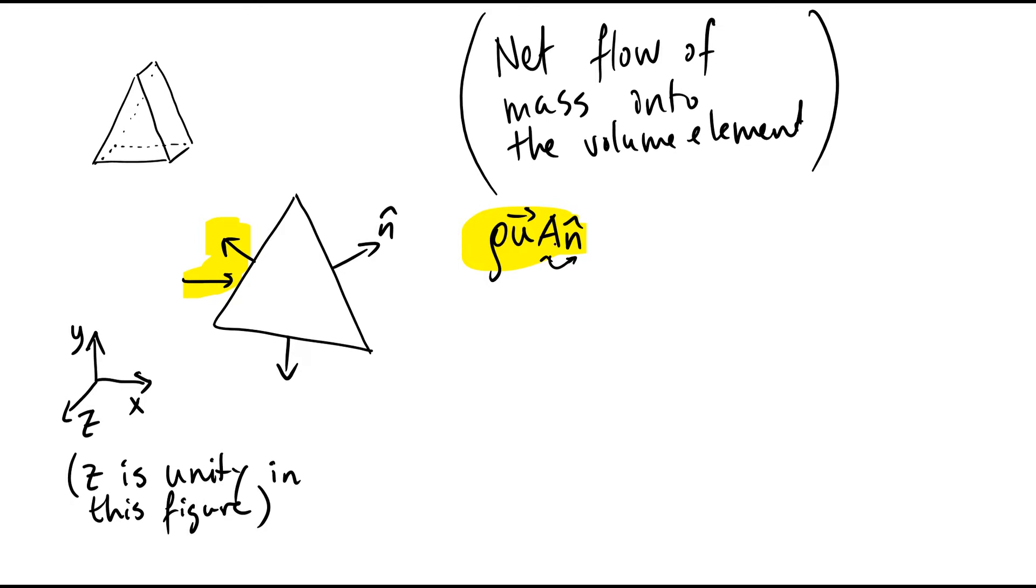So to find the cross-sectional area, we write an integral expression, where we integrate this density, velocity vector, and normal vector over the entire surface area.